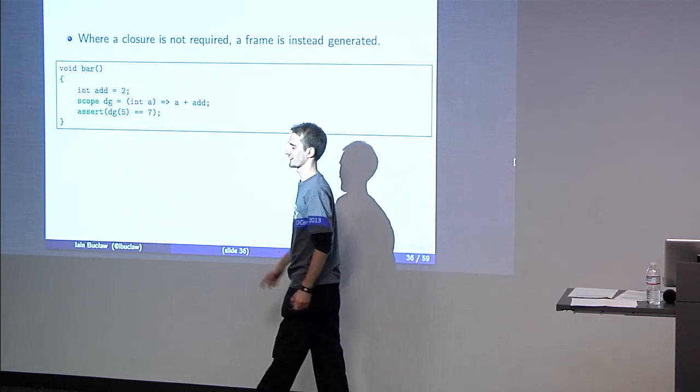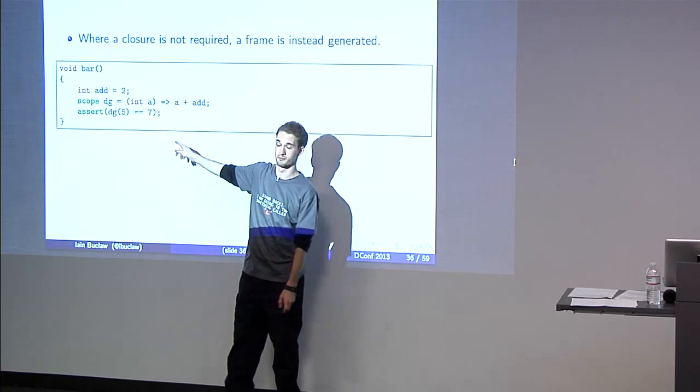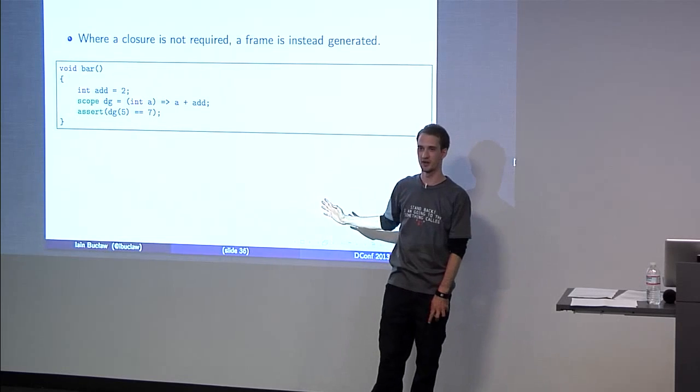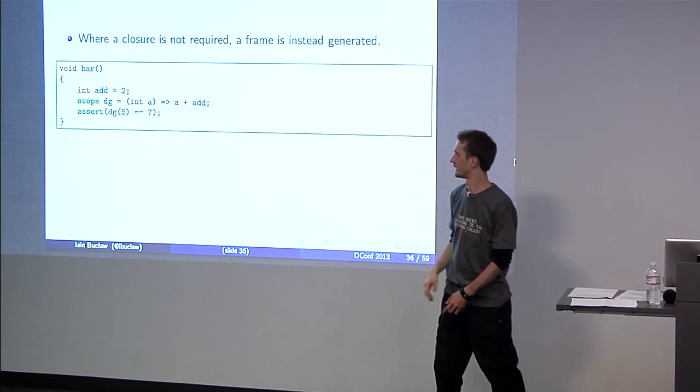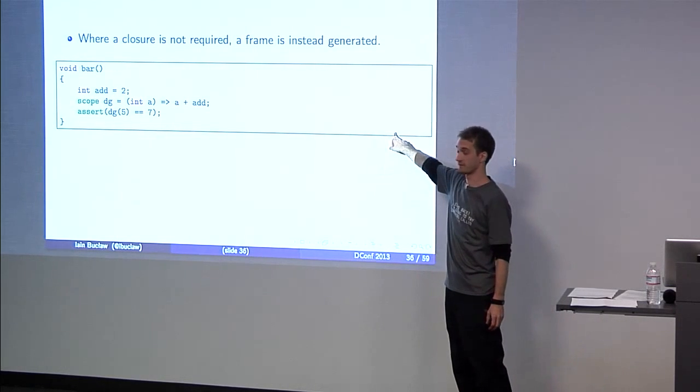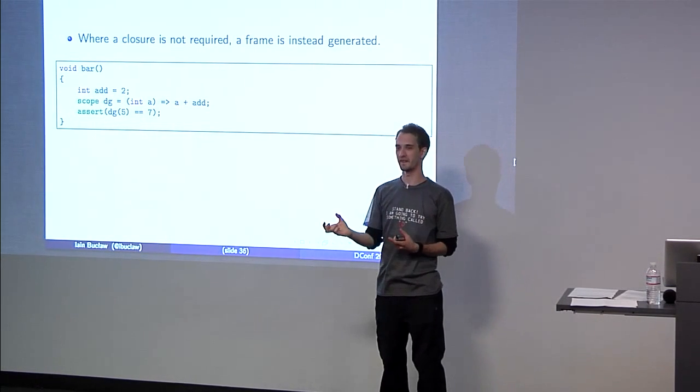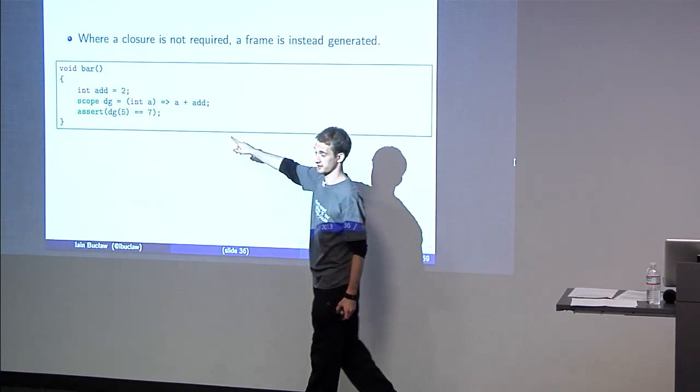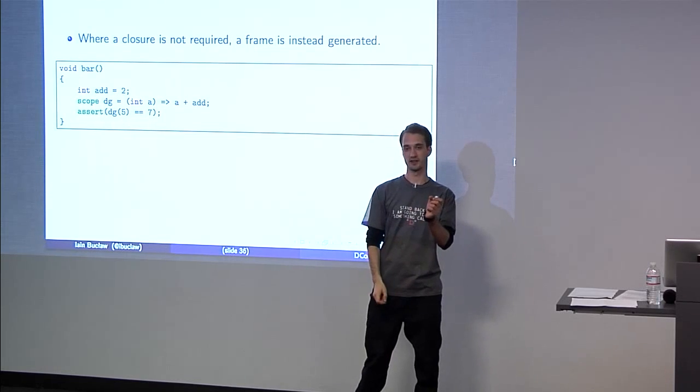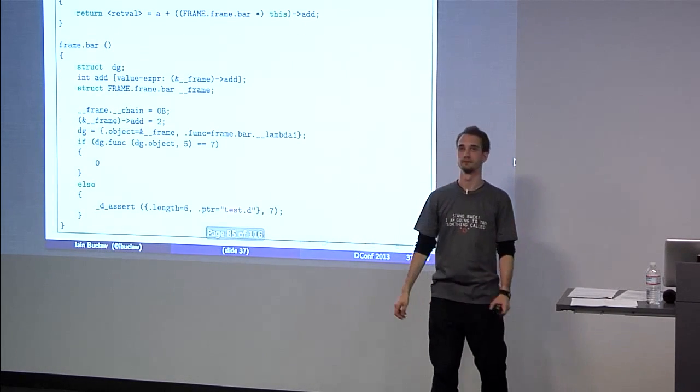Closure pointer's initialized on the heap, and then we set all the values. So, chain's null, x is seven, and return the delegate. As I mentioned, because there's no nested variables within this function, it just passes the this straight down below. Where a closure is not required, however, as I said, a static chain is created on the stack. This is required mostly for delegates because, although the GCC backend really has no knowledge of how delegates work, in fact that although it can create a frame for the function, you can't really do anything with it.